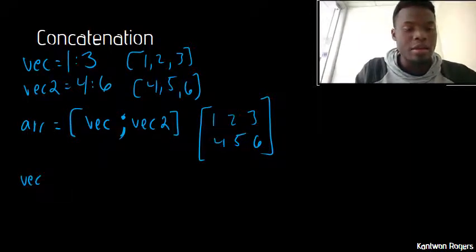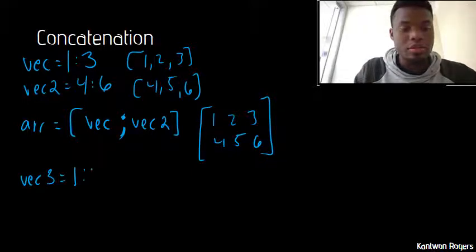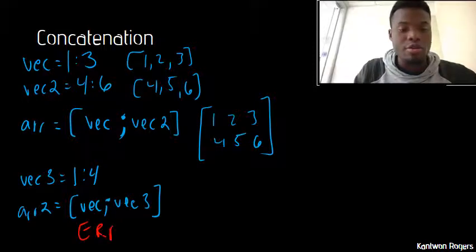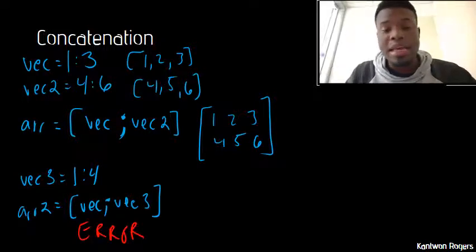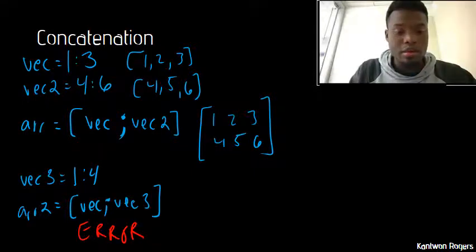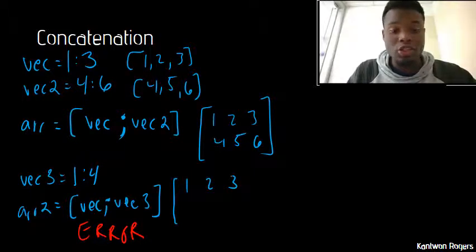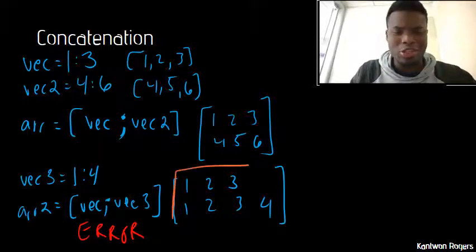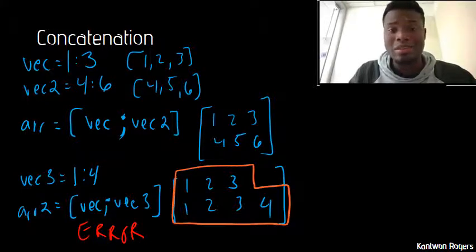For instance, if I had another vector that was one to four and tried to create an array by vertically concatenating vec with vec3, this would produce an error. That's because vec is one, two, three and vec3 is one, two, three, four — and trying to create that Tetris-type shape is not allowed. All arrays must be square or rectangular.